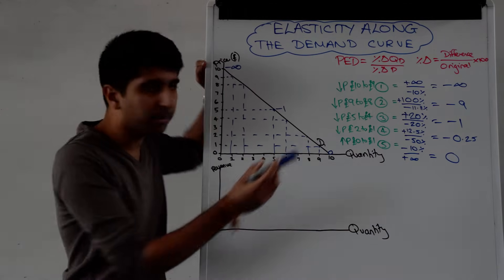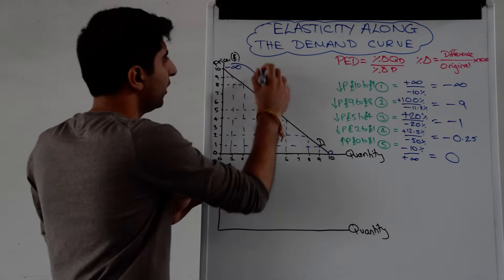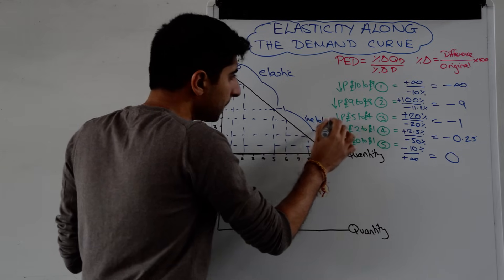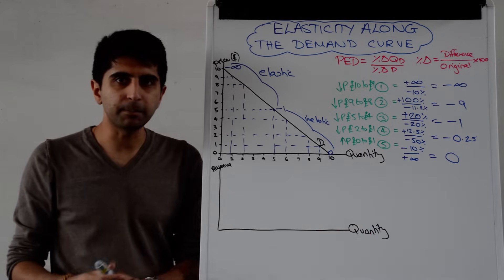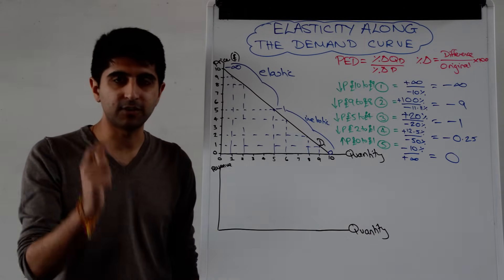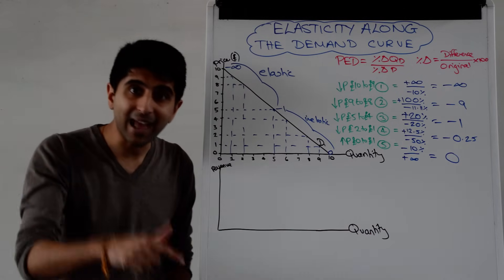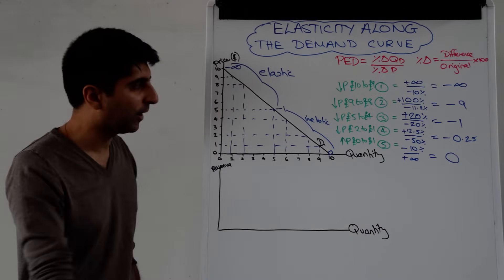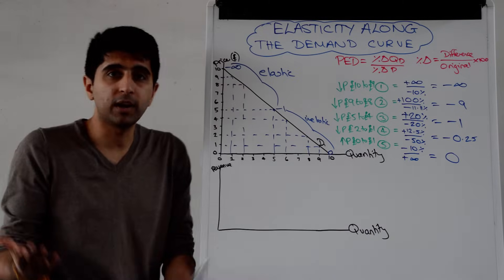So at the top we have perfectly elastic demand, right in the middle we have unit elasticity, and we can conclude that the top half of the demand curve is the elastic section, and the bottom half is the inelastic section. If you want to explain this more simply in an essay or short question, just say: on the top half, percentage changes in quantity demanded are always greater than percentage changes in price, giving elastic figures. On the bottom half, percentage changes in quantity demanded are always less than percentage changes in price, giving figures less than 1 — inelastic demand.